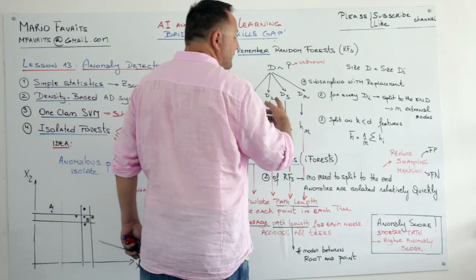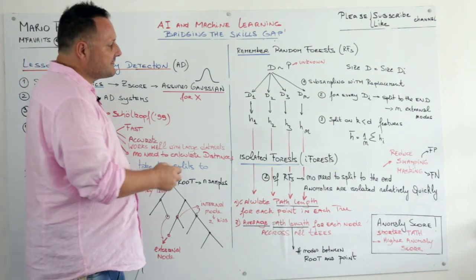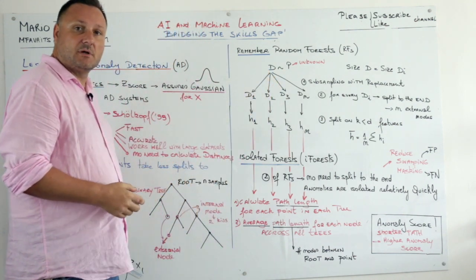And of course you subsample with replacement. Now the size of these D I's is the same size as D. We've seen that as well.